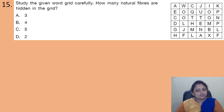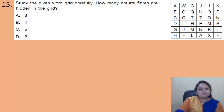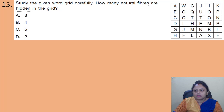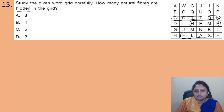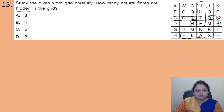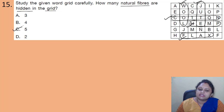Coming to the next question: study the given bar grid carefully. How many natural fibers are hidden in the grid? Options: A - 3; B - 4; C - 5; D - 2. From the grid we can find: cotton, hemp, flax, wool, and jute — a total of five natural fibers. The correct answer is option C — five.